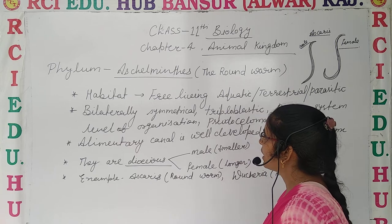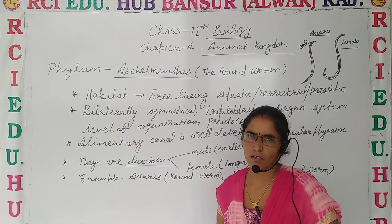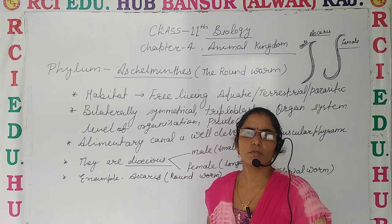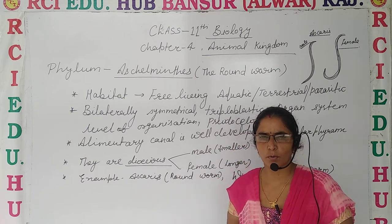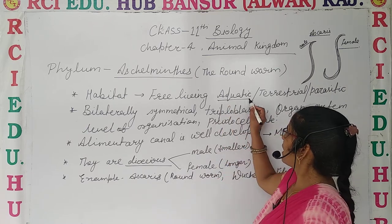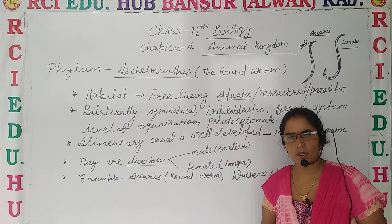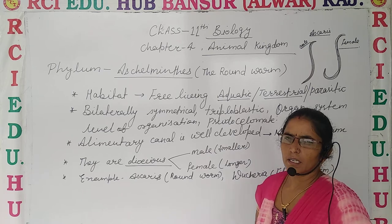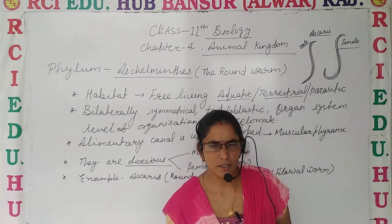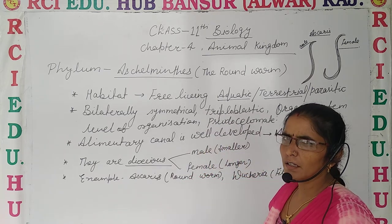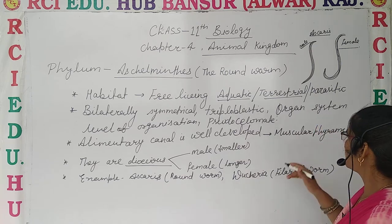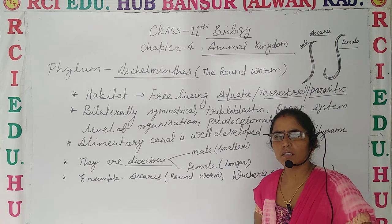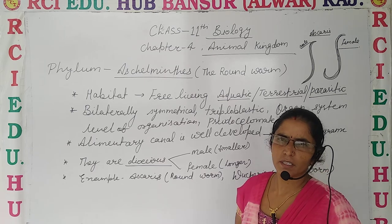If you are talking about the habitat, they are free living — it means they are not attached to the substratum, but moving freely from one point to another. They are free living aquatic as well as some of them are terrestrial. Some are also parasitic, meaning they live on other living organisms to complete their requirements.